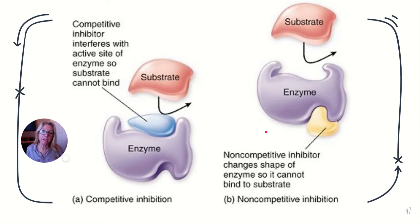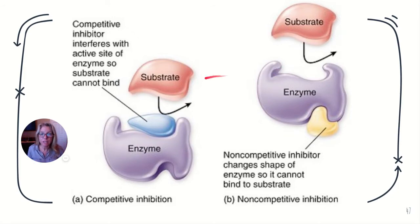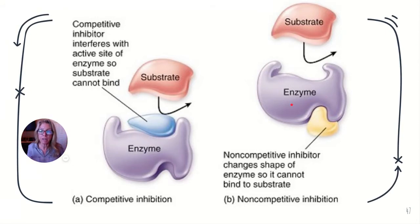Non-competitive inhibitors do not bind to the active site. They bind to a secondary site called an allosteric site. When they bind, look at the difference in the enzyme shape — it's pinched in. The flaps are no longer open. This rearranges the whole enzyme so that the substrate cannot bind, even though the inhibitor is at a different location.